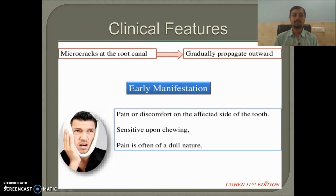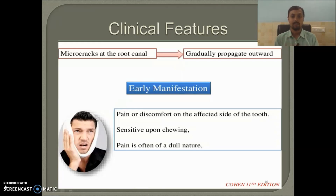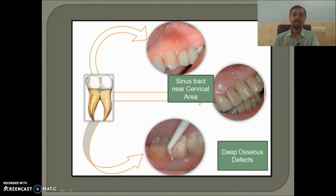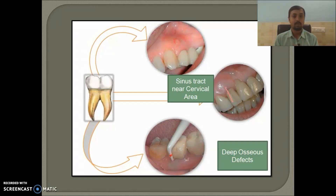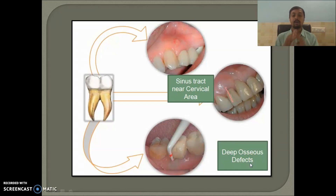Regarding clinical features, in early manifestation, as the cracks propagate outward, the patient has dull pain while chewing or biting. We can sometimes see abscess-like swelling associated with the tooth. As the lesion progresses, a sinus tract is seen near the cervical area. In non-vital teeth, the sinus tract is more apical. The presence of multiple sinus tracts, or a sinus tract both buccally and lingually, is pathognomonic for vertical root fracture. We also see the presence of deep osseous defects and deep isolated pockets — a deep isolated pocket is pathognomonic for VRF.